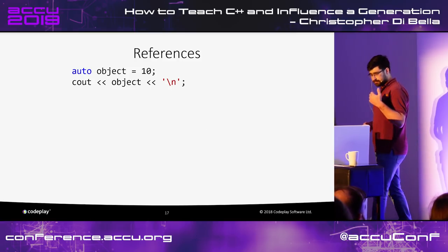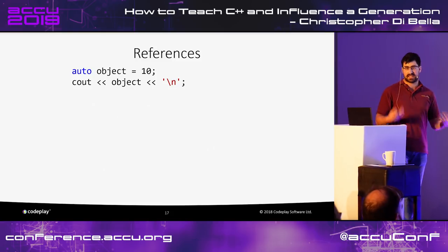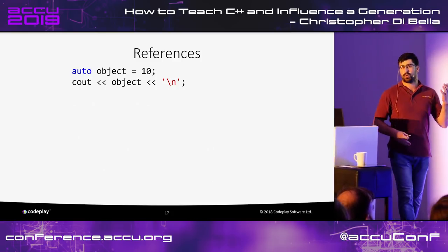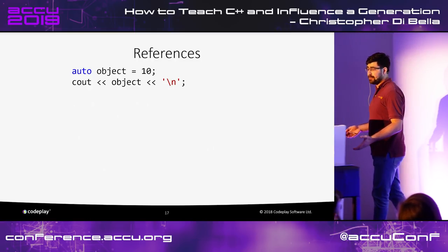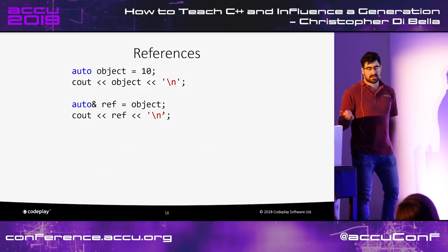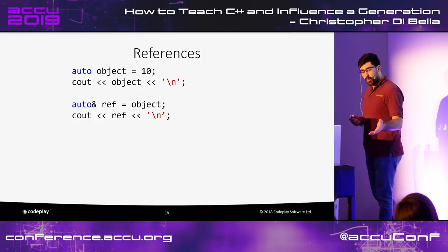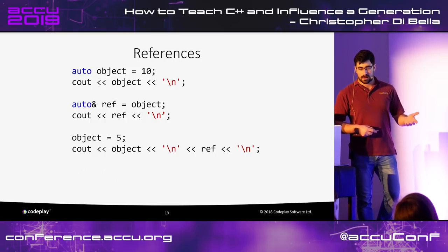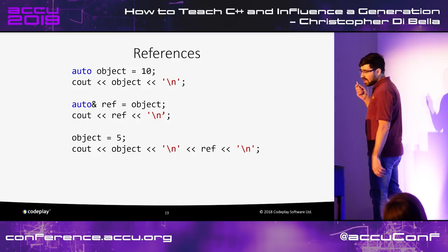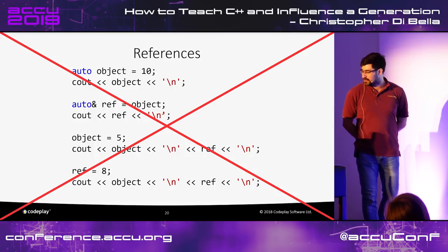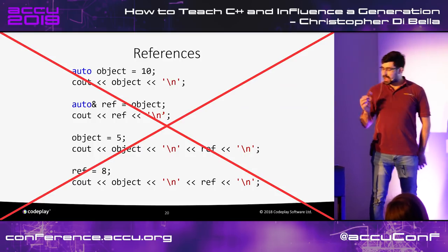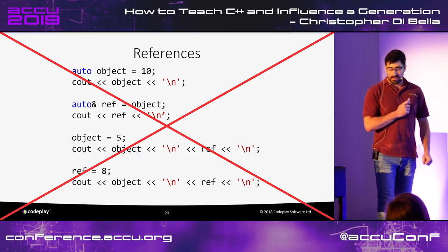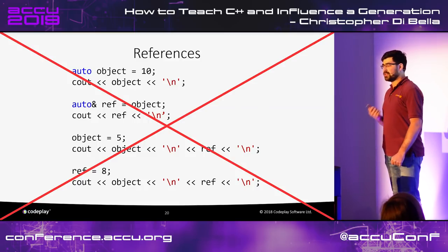In the informal survey, I looked at how references are typically introduced. We see an object initialized with value 10 written to output, then a reference initialized to reference that object also written to output printing the same result. Then we write 5 to the object, print both, and get 5, 5. Finally, writing to the reference shows the results are 8. As indicated by the red cross, I am not a fan of this approach — it doesn't show students why they should care about references. They see we can modify an object through a reference, but why couldn't we just use the object itself?